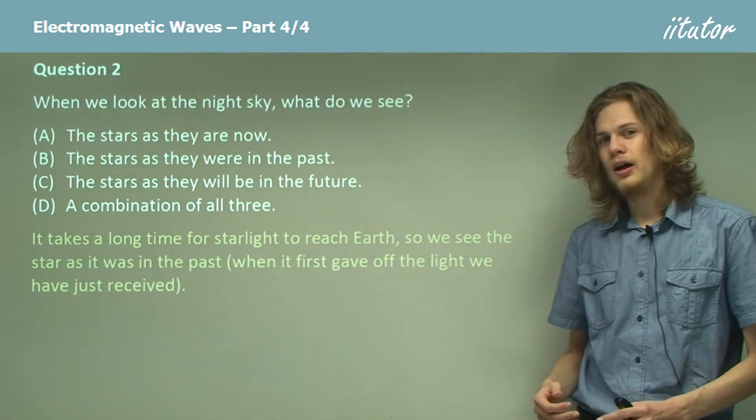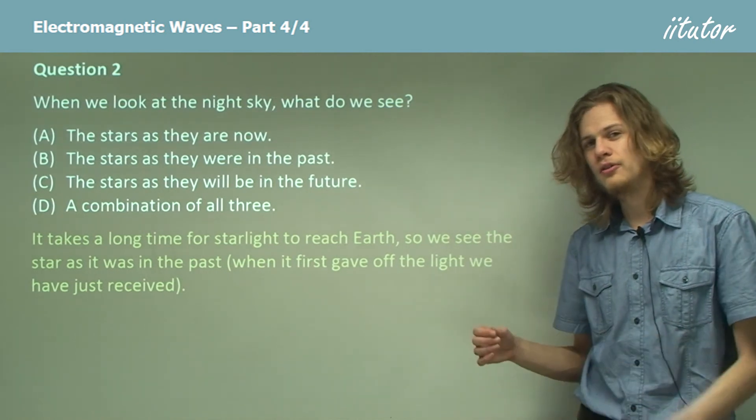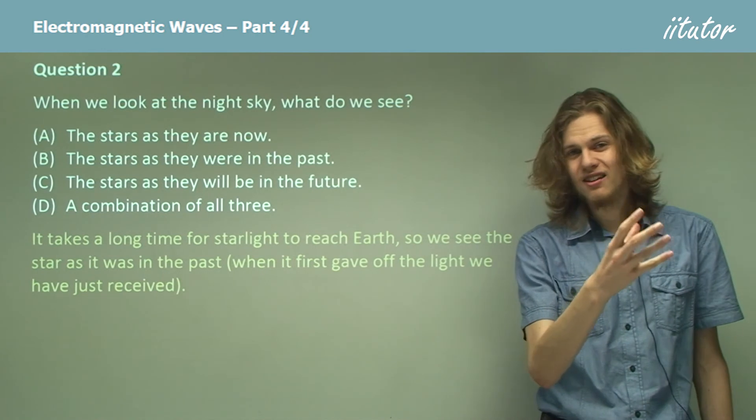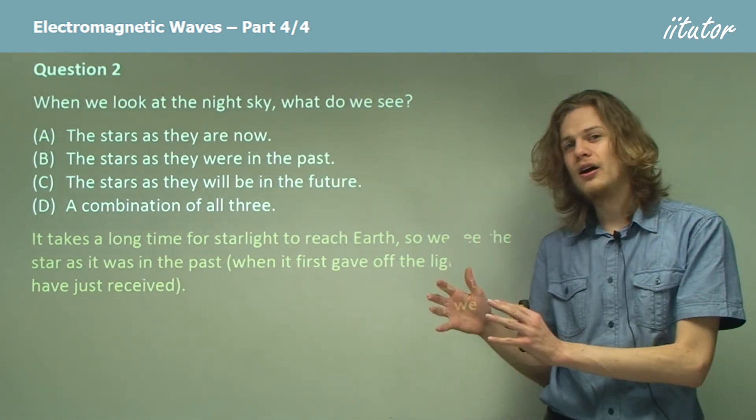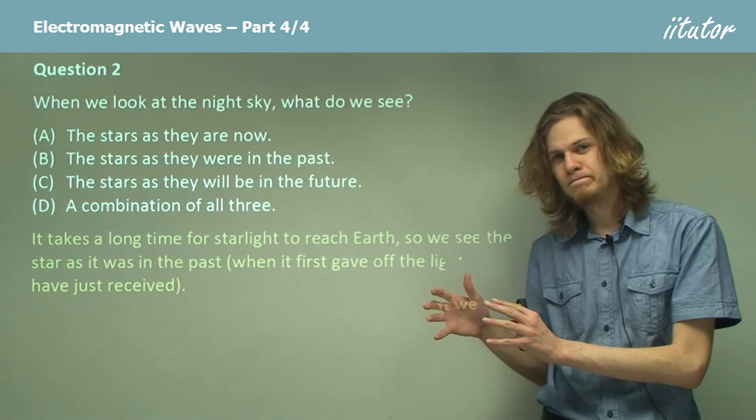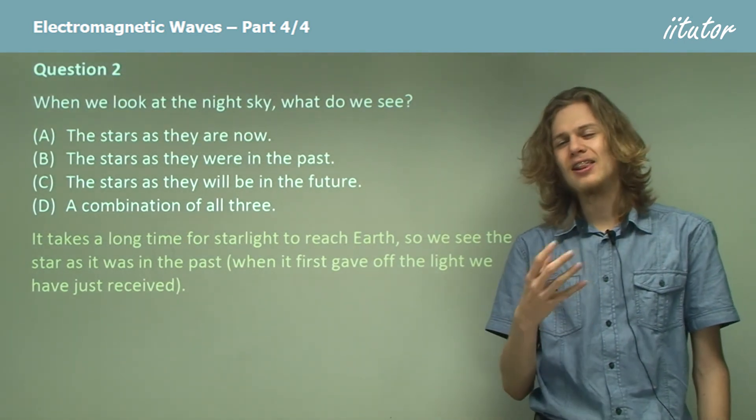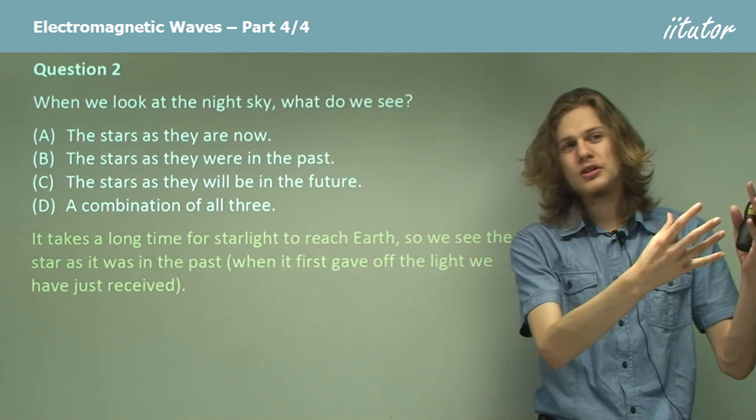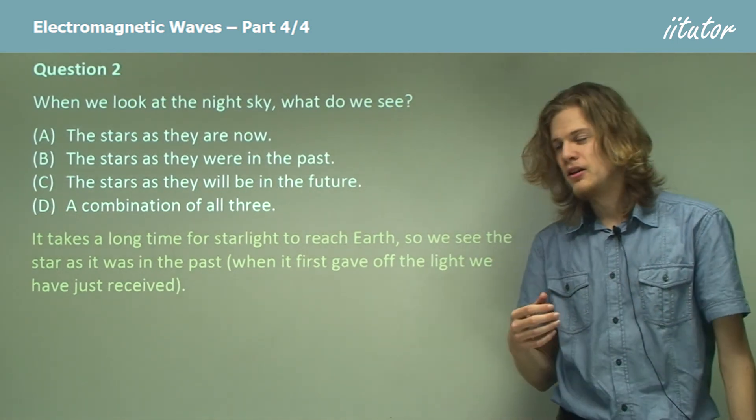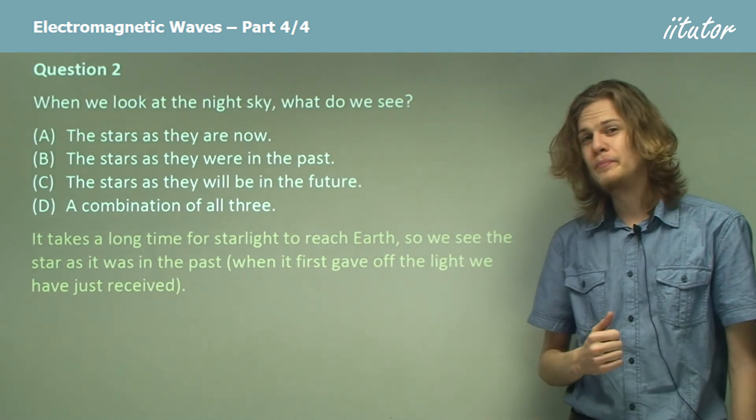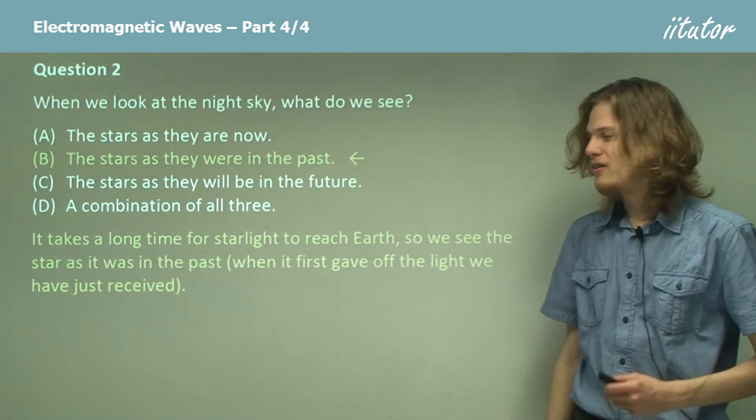If we look at, for example, Proxima Centauri, the closest star to Earth, it will emit light at some point, but we won't see that light until four and a half years later—well, 4.2 years later. The point is there's a four-year lag between the star doing something and us seeing it. So when we see it, we're looking at what the star was in the past, and our answer is B.